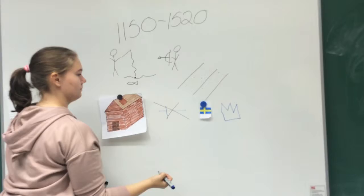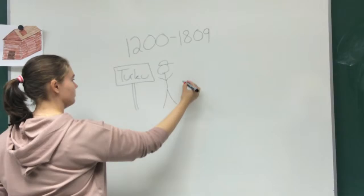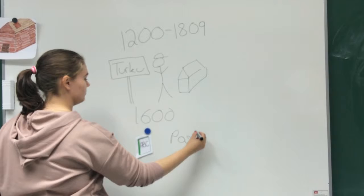Turku was made the capital of Finland. Most of the people were peasants. In the 16th century the proper Finnish language was born and the first Finnish book was made. The same century brought the first university and postal service.